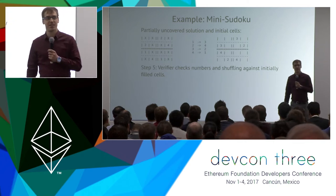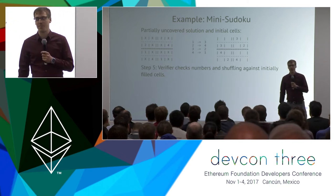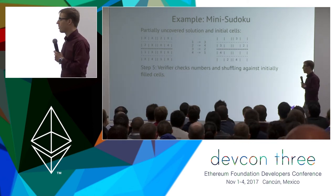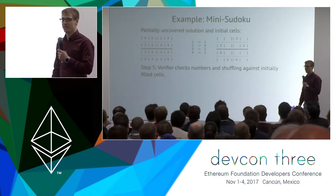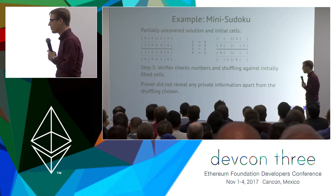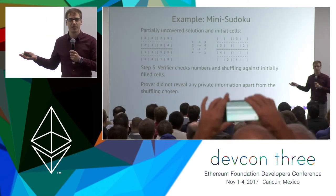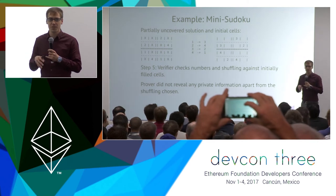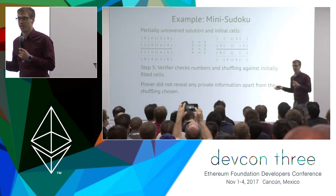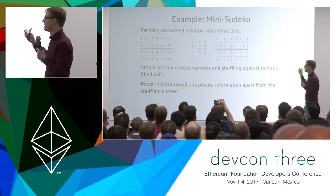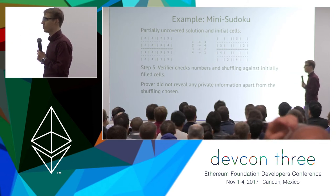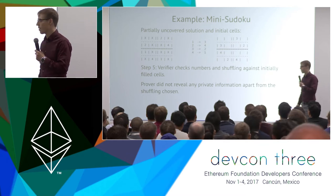What just happened? The prover revealed the shuffling — but does that reveal any information? The shuffling was chosen in secret by the prover, but it's not part of the solution, so that's fine. And the initial cells reveal nothing to be learned. So no private information was shared in this turn.